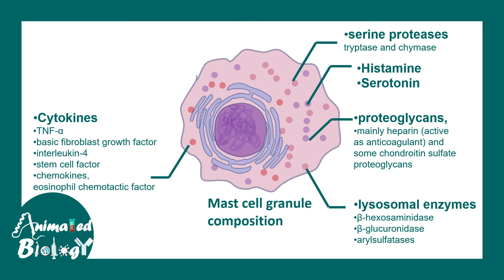Mast cells are capable of secreting a variety of cytokines. Some of the most important are TNF-alpha and interleukin-4. They also secrete chemokines such as eosinophil chemotactic factor, which allows them to attract eosinophils.